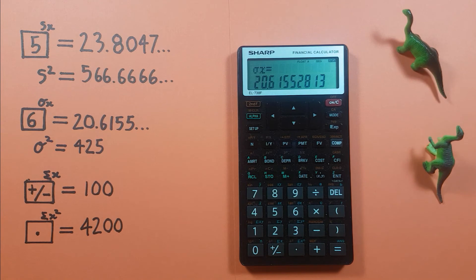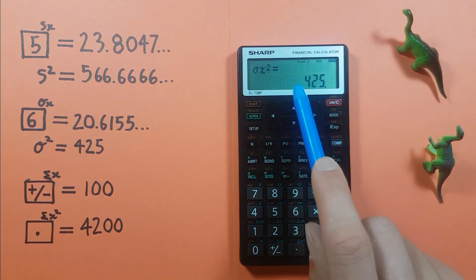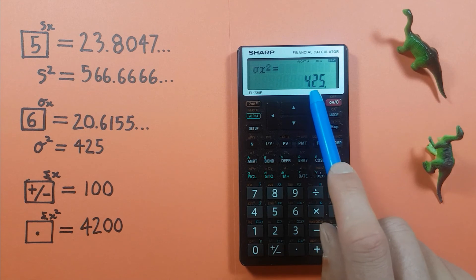And again we can get our population variance by hitting the second function key and then the period key down here and equals and we see we get a population variance of 425.